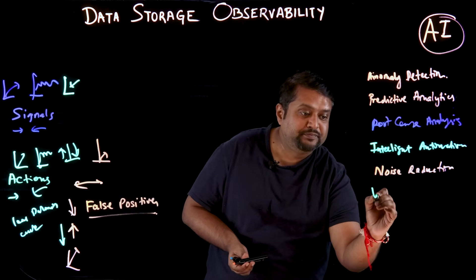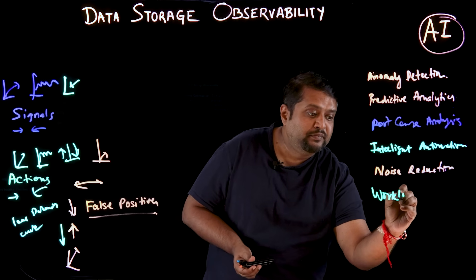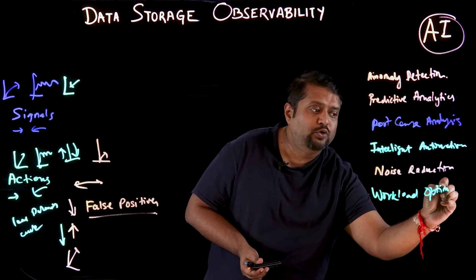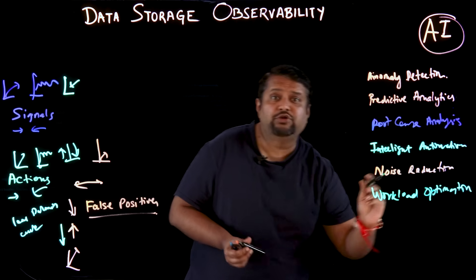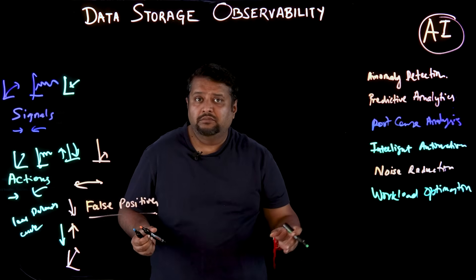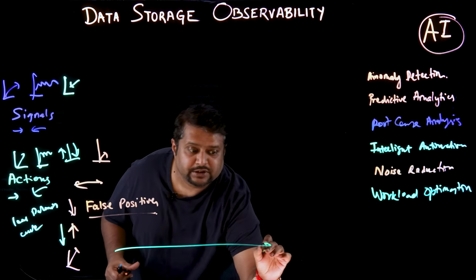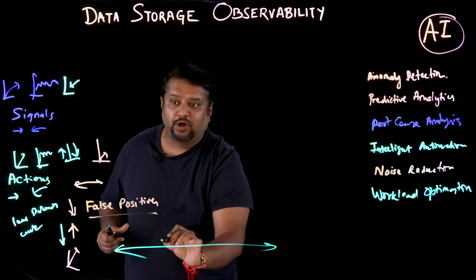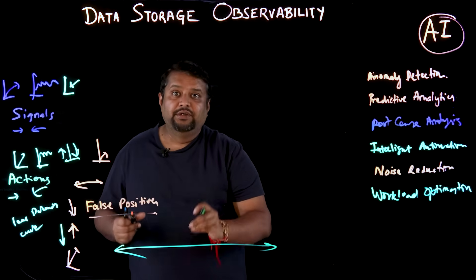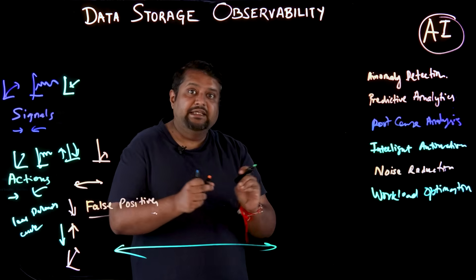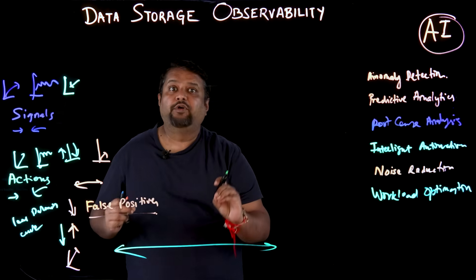The sixth AI use case is workload optimization. Are my workloads running in the most efficient manner in a storage box? It is very difficult to figure that out manually, but observability tools with AI can analyze usage patterns and suggest optimal data placement across the entire storage box to ensure tiering is in place to balance cost and performance.